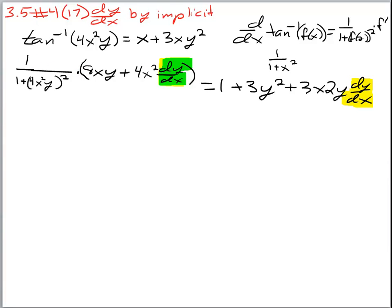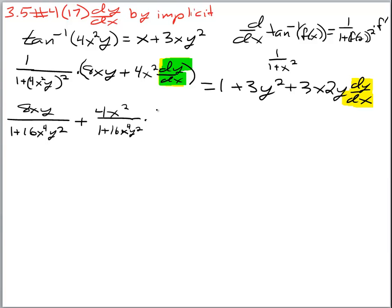Take this and multiply it by everything. So the next step gives us 8xy over 1 plus 16x to the fourth y squared, and then plus 4x squared over that same denominator 1 plus 16x to the fourth y squared, times dy/dx. The right hand side is fine — this is already isolated. So we still have to combine like terms.